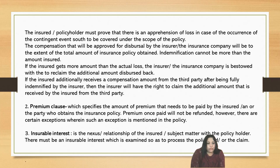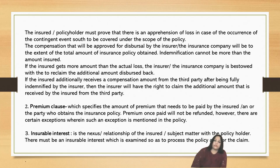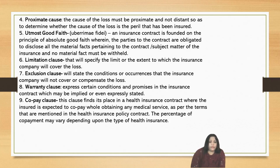If the insured additionally receives a compensation amount from a third party after being fully indemnified by the insurer, the insurer will have the right to claim that additional amount received from the third party. The next clause is the premium clause — it operates on the consideration model, specifying the amount of premium to be paid by the insured. The premium, once paid, will not be refunded, though there are certain exceptions mentioned in the policy. Next is the insurable interest clause — a nexus of the relationship of the insured with the subject matter — which must find its place in a valid insurance contract. Next is proximate cause: the cause of the loss must be proximate and not distant, so as to determine whether the cause is a peril that has been insured.